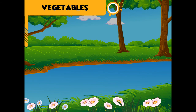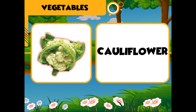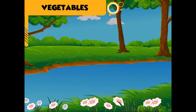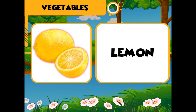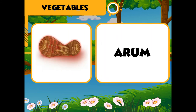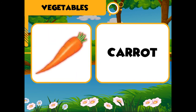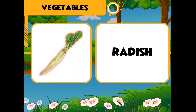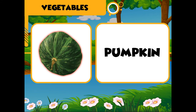Vegetables: tomato, bottle gourd, cauliflower, potato, turnip, brinjal, peas, lemon, onion, bitter gourd, arum, tinda, carrot, ridge gourd, lady finger, radish, cucumber, pumpkin, capsicum.